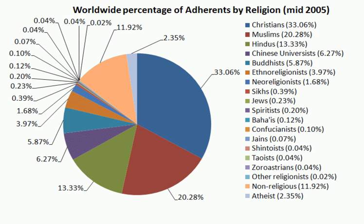Since Vedic times, people from many strata of society throughout the subcontinent tended to adapt their religious and social life to Brahmanic norms, a process sometimes called Sanskritization. It is reflected in the tendency to identify local deities with the gods of the Sanskrit texts.